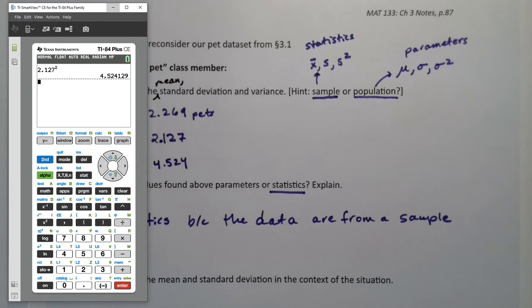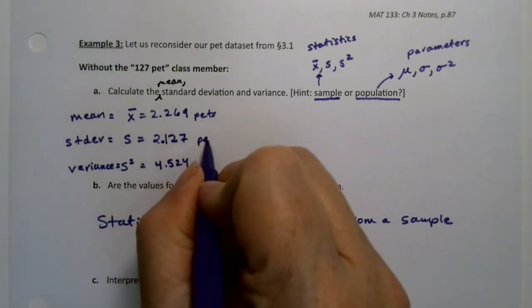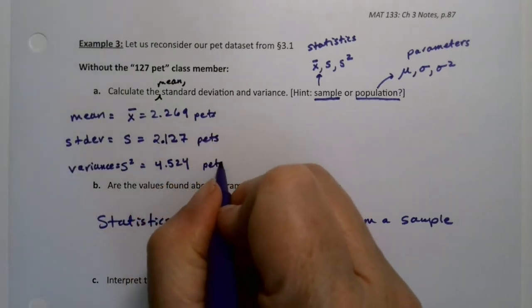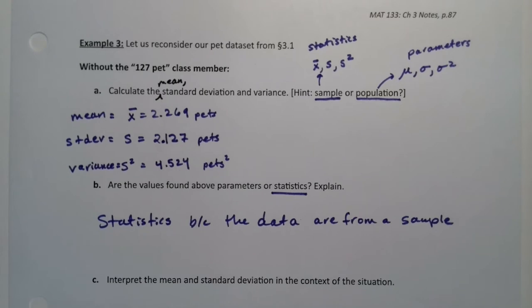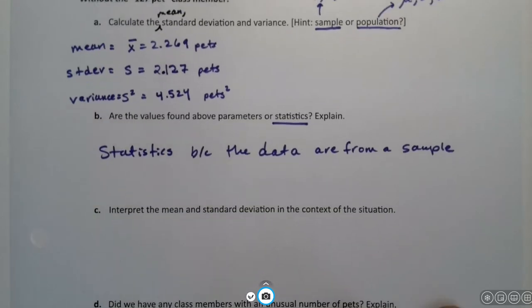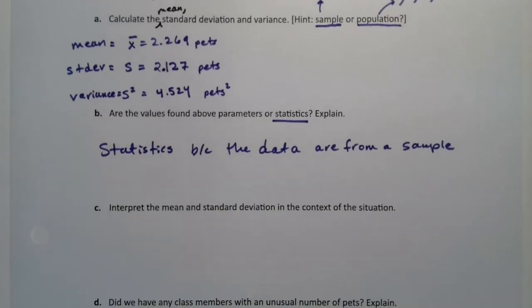And it tells me that s squared is about 4.524. Now the units, again, for these data were pets, which means the unit for the variance is pet squared, which is useless. Variance doesn't have an interpretation in that way. Variance just means the larger the number, the larger the spread is for a data set. That's all we have for an interpretation right now. It is more useful for later stuff, but not for what we're doing right now.